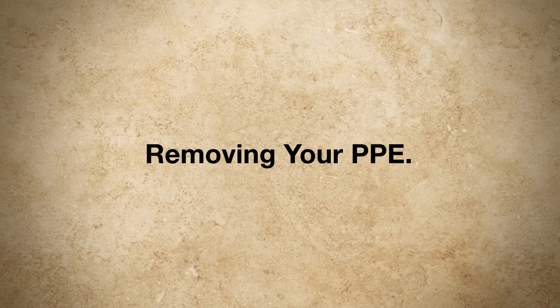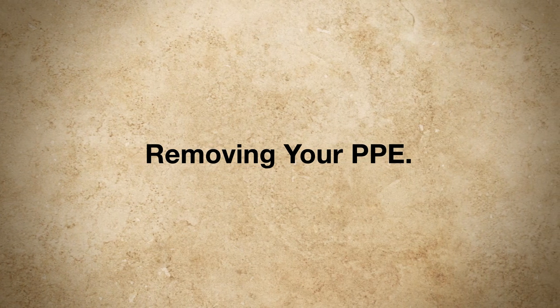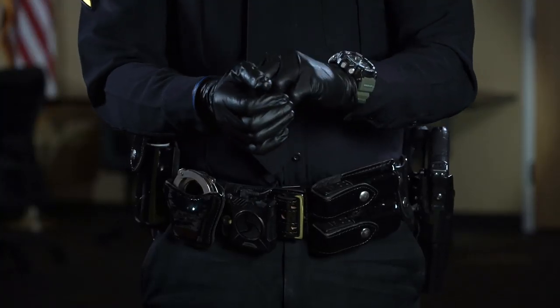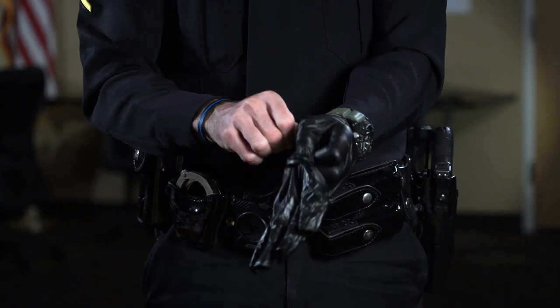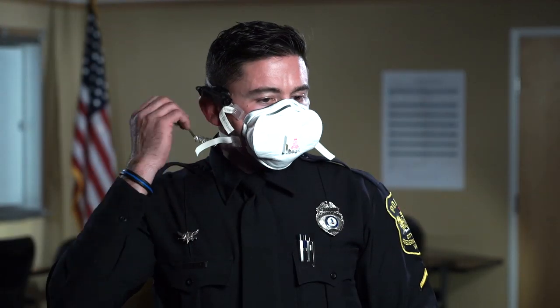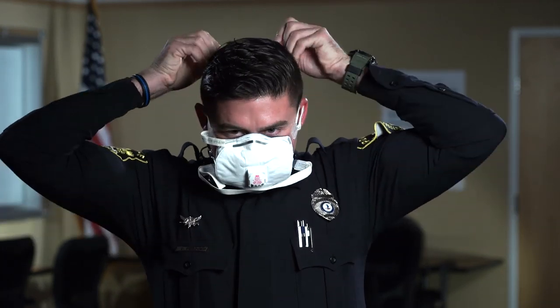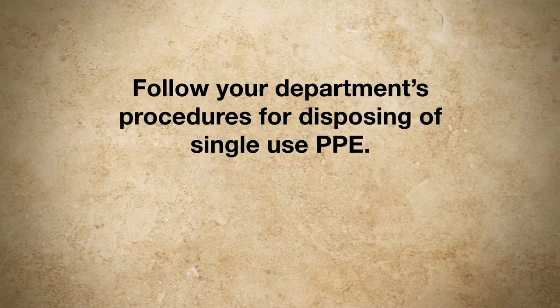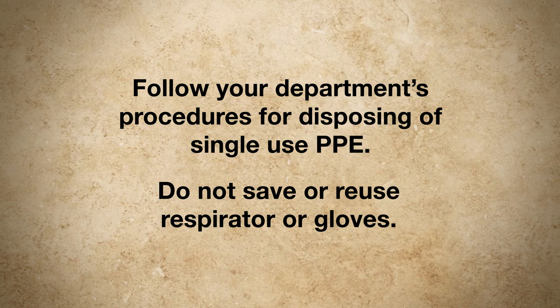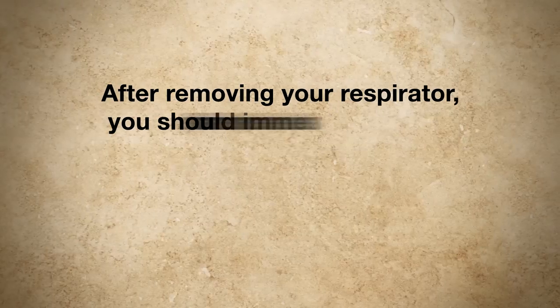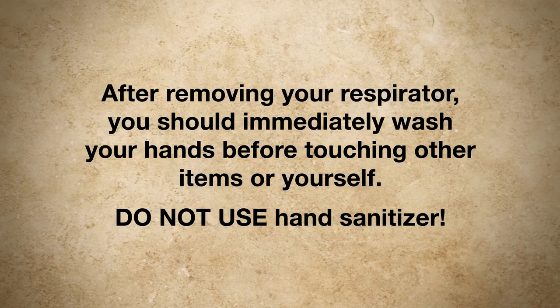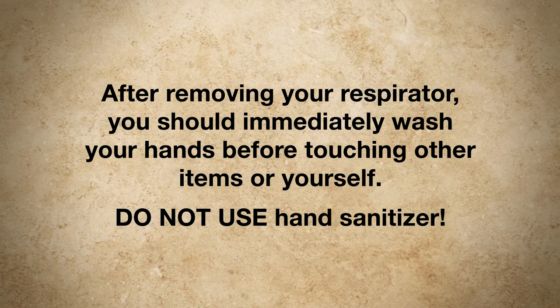Once you have exited the scene and are in a clean environment, you should remove your PPE as follows. Start by removing your gloves and placing them in a labeled durable 6 mil polyethylene bag. Then remove anything that is on top of your respirator. Next, carefully remove the respirator without touching the front of it as it may be contaminated. Reach behind your head and pull the bottom strap forward, followed by the top strap. Place the contaminated single-use respirator in a labeled durable 6 mil polyethylene bag. Dispose of single-use PPE according to your department's procedures. Do not save or reuse the respirator or gloves. After removing your respirator, you should immediately wash your hands before touching other items or yourself. Do not use hand sanitizer.